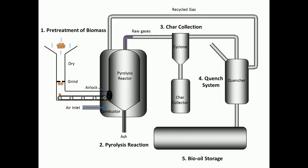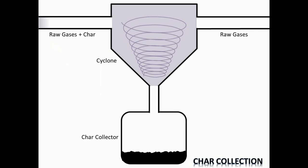The next step is char collection. In this step, the hot raw produced gases are introduced into a cyclone separator to remove char.